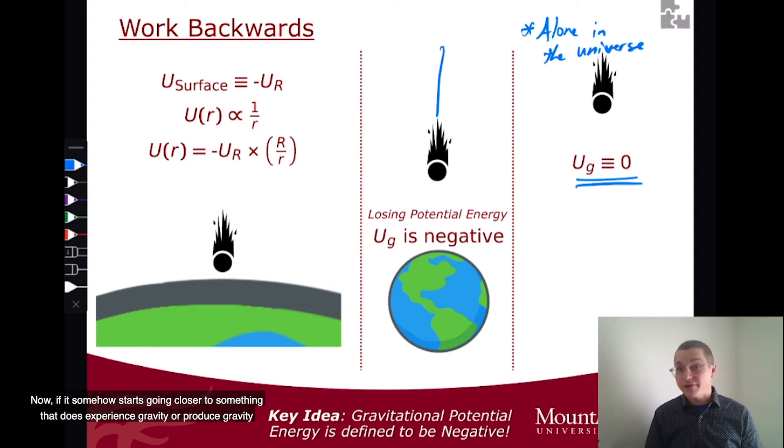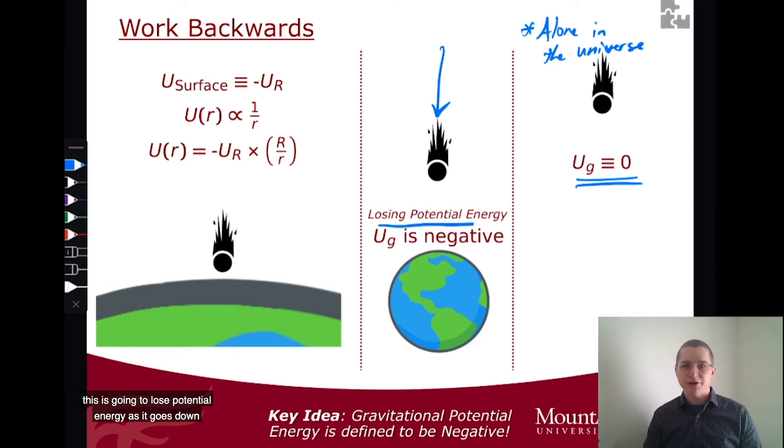Now, if it somehow starts going closer to something that does experience gravity or produce gravity, then kind of the opposite to how the spaceship gained potential as it went up, this is going to lose potential energy as it goes down closer to the thing that is producing this gravitational force.